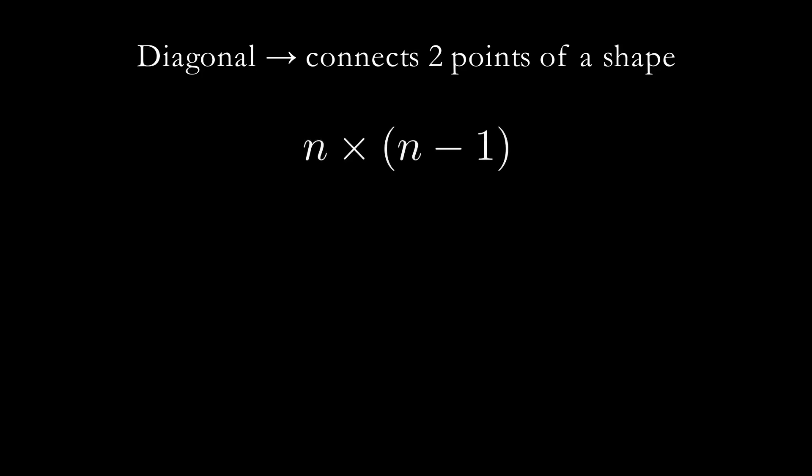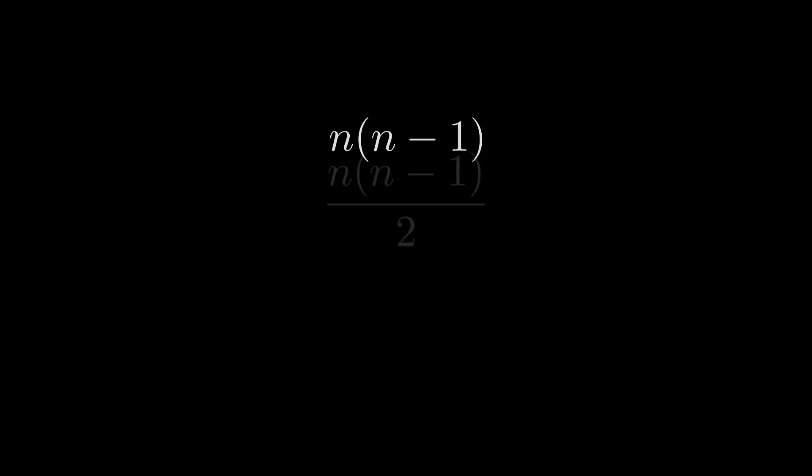Multiplying these together gives the total possible ways to pick two points. However, when drawing the line between two points, the order of the points we picked in doesn't matter. So, to prevent counting each diagonal twice, let's divide our formula by 2.